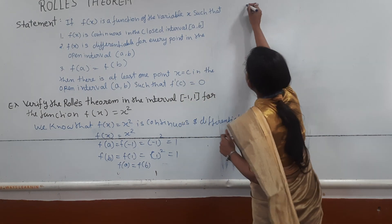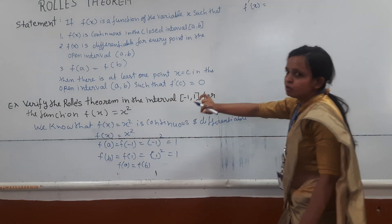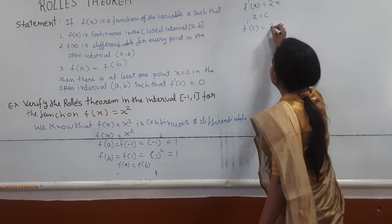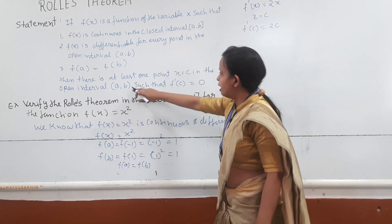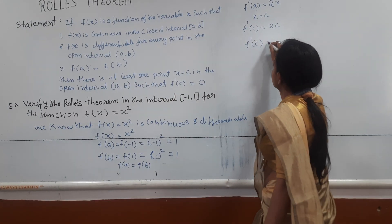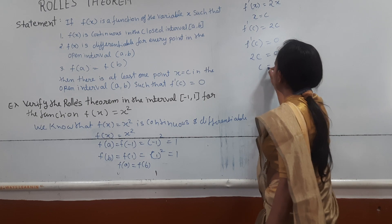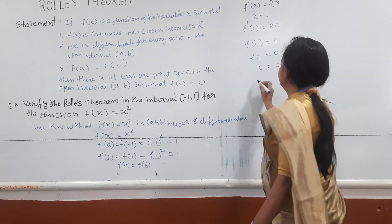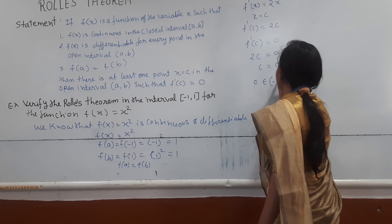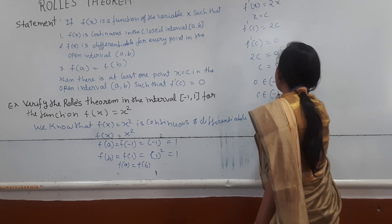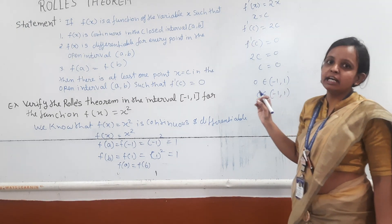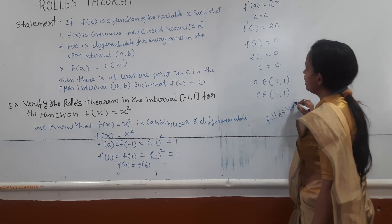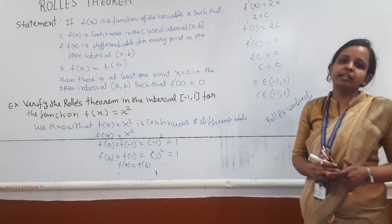Now we take the derivative of the function. The derivative of x² is 2x. Putting x = c, we get f'(c) = 2c. Since f'(c) must equal 0, we get 2c = 0, so c = 0. We check: does 0 belong to the interval (-1, 1)? Yes, 0 belongs to (-1, 1), so c belongs to (-1, 1). Thus Rolle's theorem is verified.